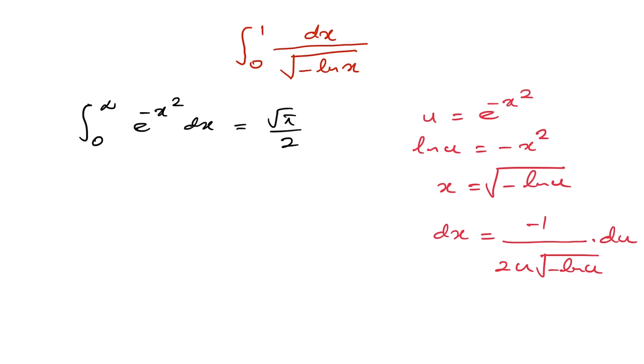Okay, now let us plug in. So we have here now limit from 1 to 0, e to the minus x square, we know is u, and dx here we have as minus du over 2 times u square root of minus natural log of u, and we know this is equal to square root of pi over 2.